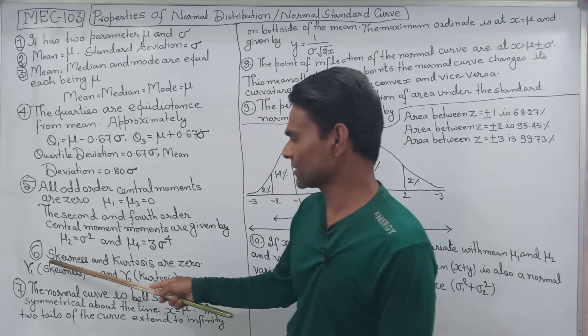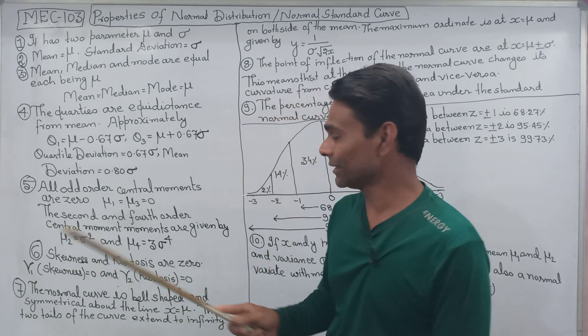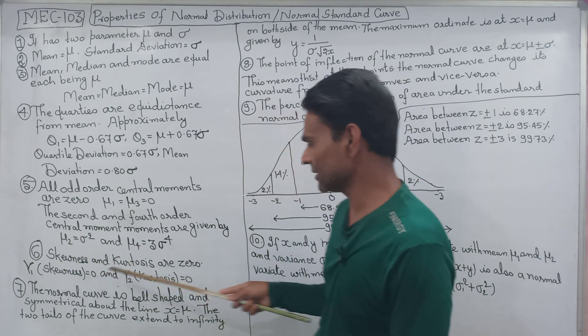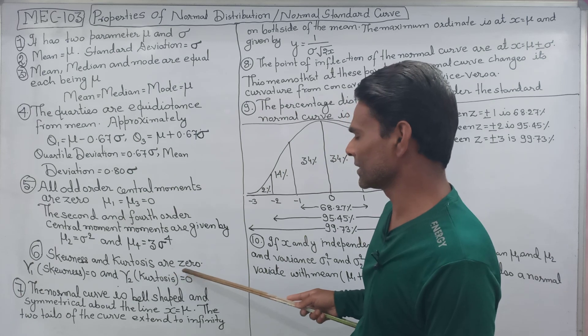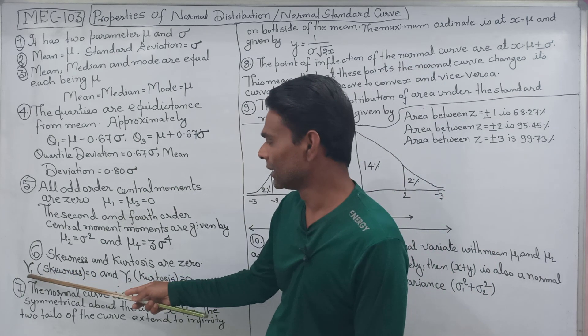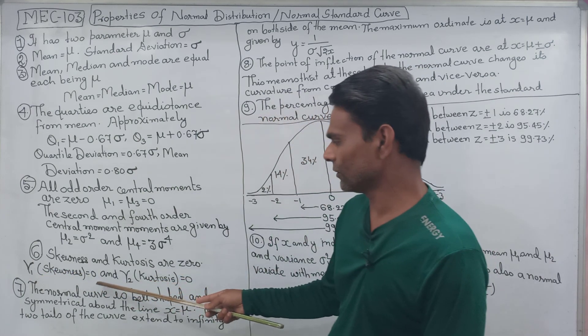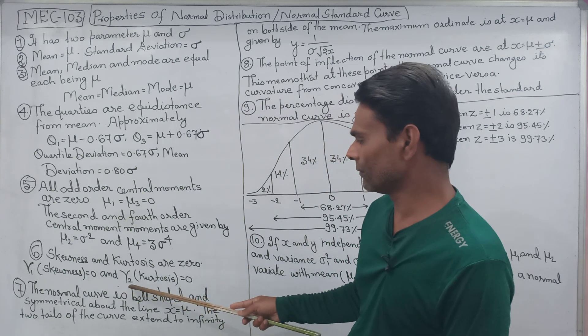Skewness under the normal distribution — skewness and kurtosis are both equal to zero. So gamma1 (skewness) = 0 and gamma2 (kurtosis) = 0.